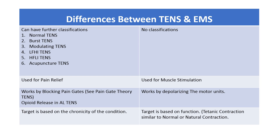Here we can see some differences between TENS and EMS. Regarding classification, TENS has further subtypes: normal TENS, burst TENS, modulating TENS, low frequency high intensity TENS, high frequency low intensity TENS, and acupuncture or acupuncture-like TENS. On the EMS side, there are no classifications.